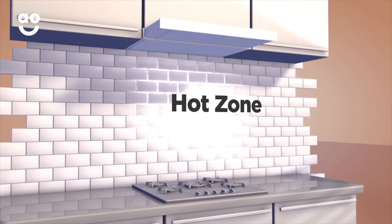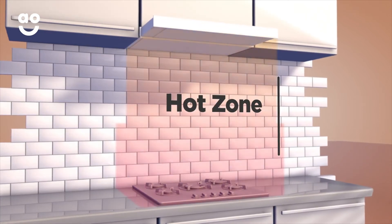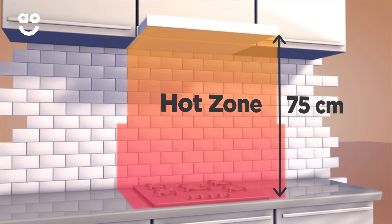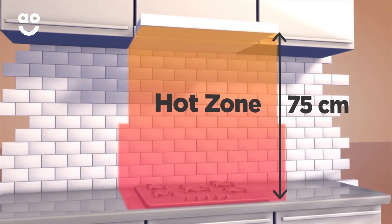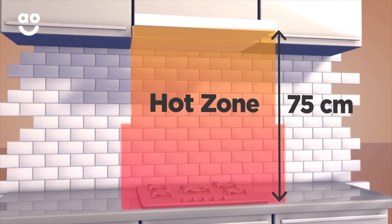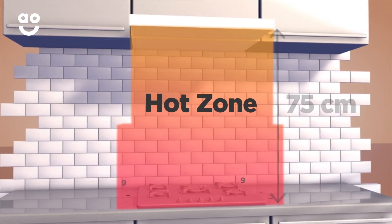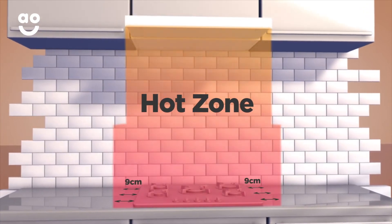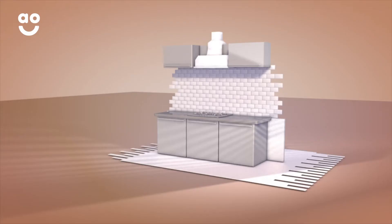Next up, check the area between the hob and the hood. This area is called the hot zone. For safety, there needs to be at least 75 centimeters between the hob and the hood, and it must be clear of any flammable materials such as wallpaper and plug sockets.